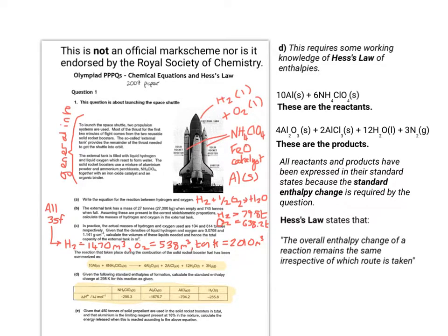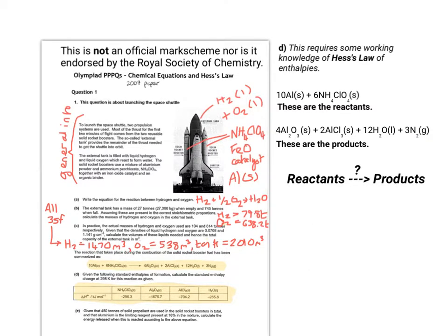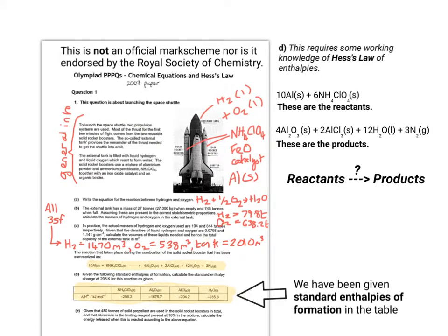Hess's Law states that the overall enthalpy change of a reaction remains the same, irrespective of which route is taken. If we take a simple example of A becoming B, but we don't know how to measure or can't measure delta rH directly, you may be able to look up the data for or measure delta h1 and delta h2. Going from A to B through the indirect route via C means you can add delta h1 and delta h2 together. They want us to work out the enthalpy change going from the reactants as listed to the products as listed. In the table, we've been given standard enthalpies of formation. Now we need to think about how we could put this into a Hess's Law cycle.